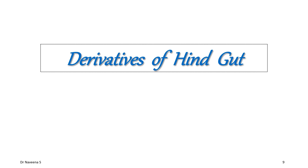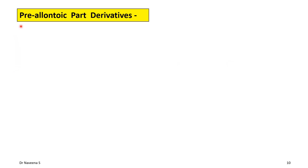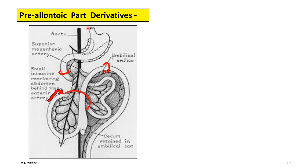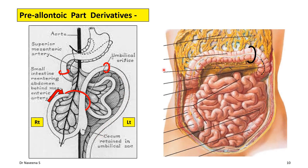Before looking into the further changes in the cloaca, let's consider the derivatives of the hindgut. Starting with the derivatives of the pre-allantoic part: as the midgut loop undergoes rotation, it pushes the dorsal mesentery of the hindgut towards the left side, so that the pre-allantoic part of the hindgut occupies the left part of the abdominal cavity. Consequently, derivatives from the pre-allantoic part are seen in the left part of the abdominal cavity. They are the transverse colon left one-third portion — whereas the right two-thirds is given off from the midgut — so the most proximal portion of the pre-allantoic part gives rise to the left one-third of the transverse colon.